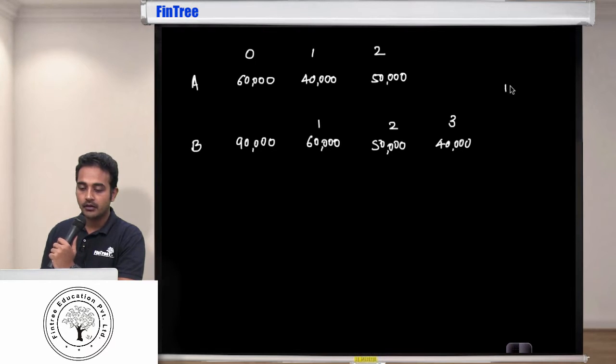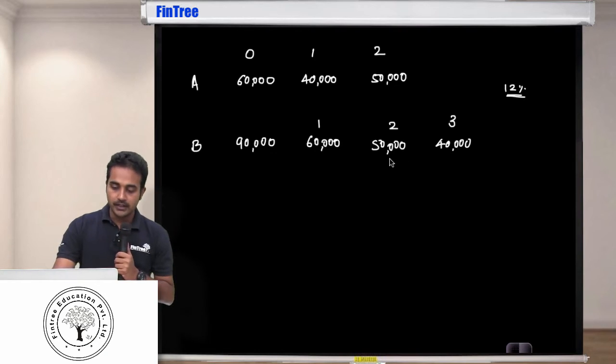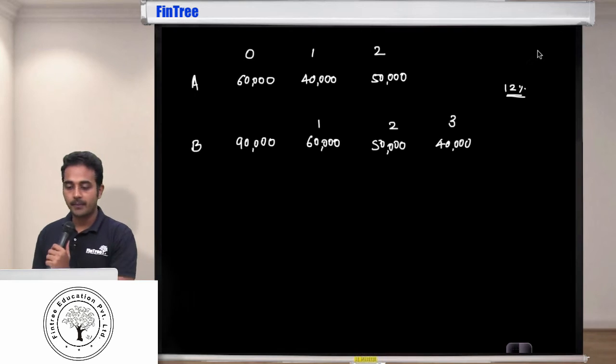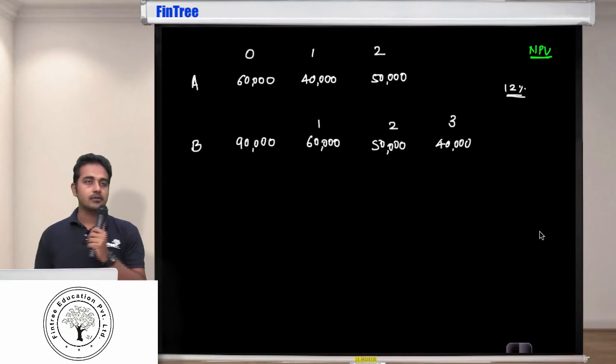Both of them have the same discount rate of 12% per annum. My first question to you: calculate NPV of both the projects, NPV of project A as well as project B.